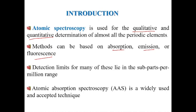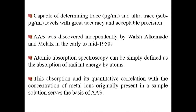Absorbance means the absorption of radiation by atoms in the sample. Emission means that an atom gets excited by taking sufficient energy, and when it comes back to the ground state it emits radiation of characteristic wavelength, and that intensity is measured in emission spectroscopy. Detection limits for many elements lie in the sub-ppm range — it can go to ppt or beyond. AAS is a widely accepted technique and can determine concentration of elements with great sensitivity, accuracy, and acceptable precision.